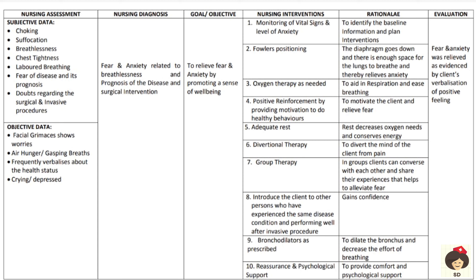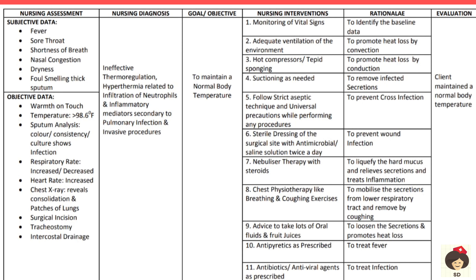Divertional therapy using light music or patient-preferred activities diverts focus from fear. Group therapy brings together patients with the same disease for counseling and peer sharing — patients share experiences and feelings, which may relieve fear and anxiety. Introduce the patient to someone who has already undergone the same surgery successfully to build confidence. Bronchodilators increase oxygenation to the lungs. Reassurance and psychological support comfort the patient, promoting positive feelings and verbalization of positive behaviors.